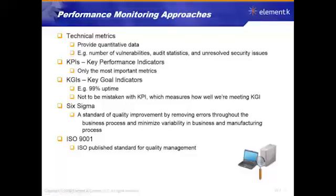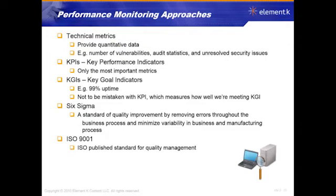Don't mistake the KPI with the KGI. The KGI — the goal — is the target. The KPI — the performance indicator — is where we really are and how well we're meeting the goal. We already know that Six Sigma is a standard of quality improvement. We're trying to remove errors throughout our whole business process and minimize the variability in our business and manufacturing process. When we're monitoring performance, we've got to look at the data and figure out how we can improve. Six Sigma provides a formal process to reduce errors and ensure no variability in our process.